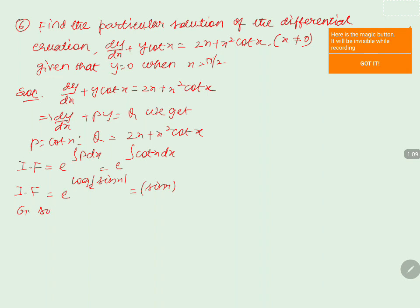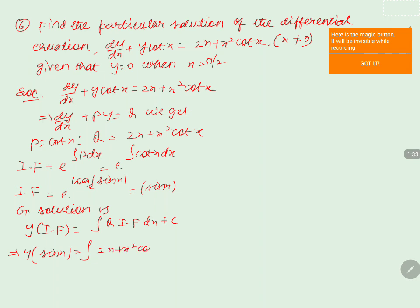Now we write the general solution: y · (integrating factor) = ∫Q · (integrating factor) dx + c. That is, y·sin(x) = ∫(2x + x²·cot(x))·sin(x) dx + c.